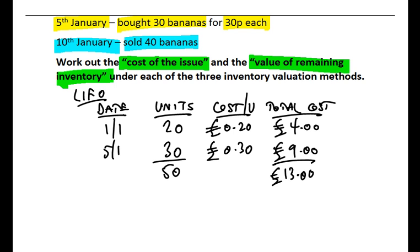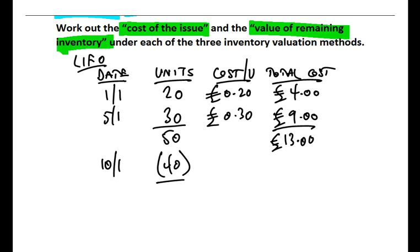The harder bit comes in looking at the sale or the issue of inventory on the 10th of January. Now we know we're selling 40 bananas, 40 bananas now leaving the storeroom. So we know that at the end of the month, we're going to have 10 bananas left. But how can we go about identifying where that 40 bananas came from?